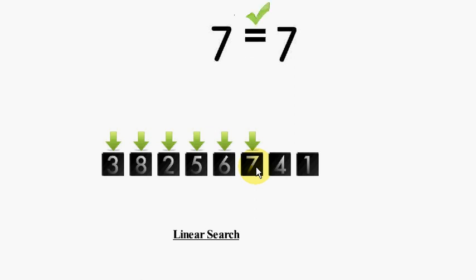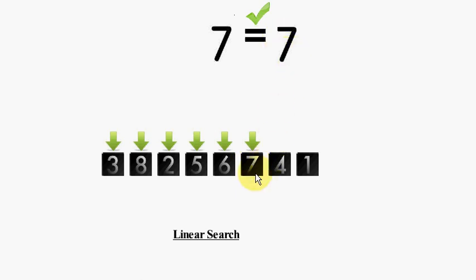So in linear search what happens is you compare with all the elements one by one — first the first element, then the second, third, fourth — likewise if you have n numbers it will search n times, unless the search element, in this case number 7, is found. So this is how a linear search works. In the next tutorial I will show you how to write a program which works on linear search. Hope you understood the working of linear search and thanks for watching the video.